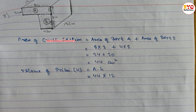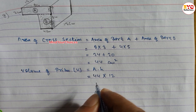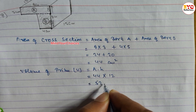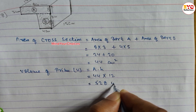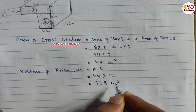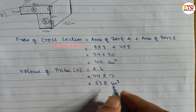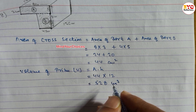44 into 12, so we get 528 cm³ — the volume of the prism. Hope you understand this question.